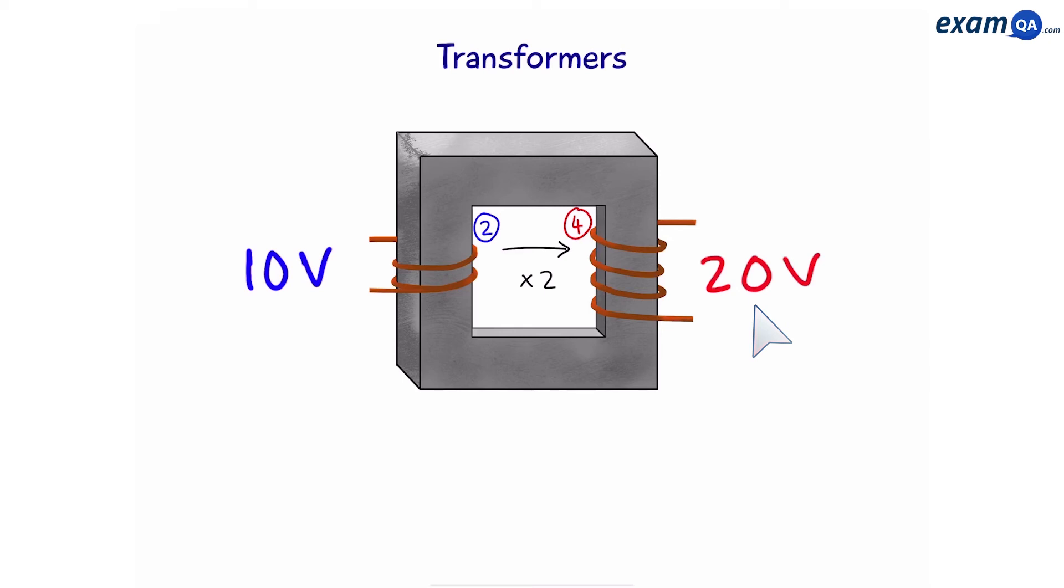So, when the number of coils multiplies, the potential difference also multiplies by the same factor. From this, we can create the following equation. The voltage in the primary coil divided by the voltage in the secondary coil is equal to the number of coils in the primary coil divided by the number of coils in the secondary coil. And here's where they go in the equation.